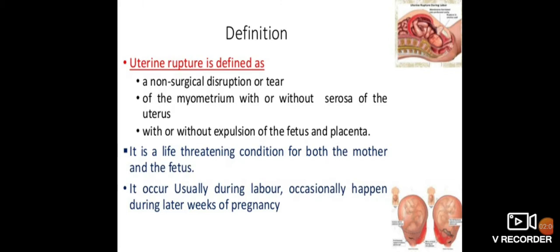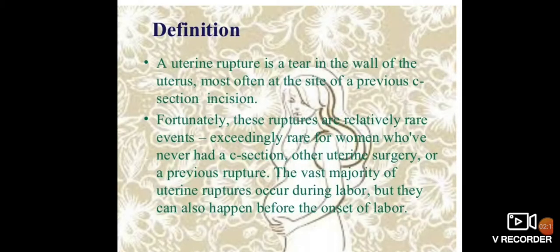Uterine rupture occurs usually during labor, though it can occasionally happen during later weeks of pregnancy. It is most often a tear in the wall of the uterus at the site of a previous cesarean incision. These ruptures are relatively rare events for women who have never had a c-section, other uterine surgery, or a previous rupture. The majority of uterine ruptures occur during labor but can also happen before the onset of labor.